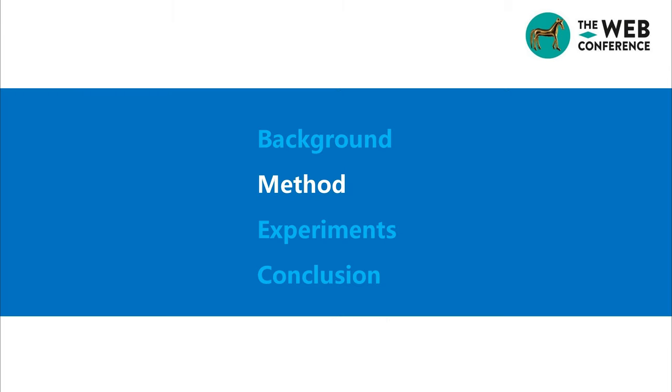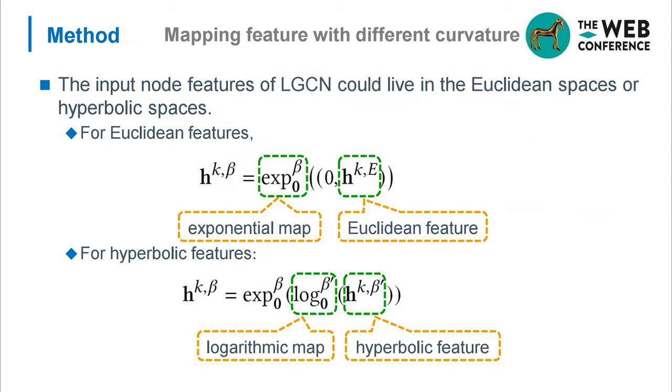Next, I will present our method LGCN in detail. The input node features of LGCN could live in Euclidean space or hyperbolic space. For Euclidean space, we need to transform it to hyperbolic space. For hyperbolic features, we need to transform these features into a hyperbolic space with the appropriate curvature.